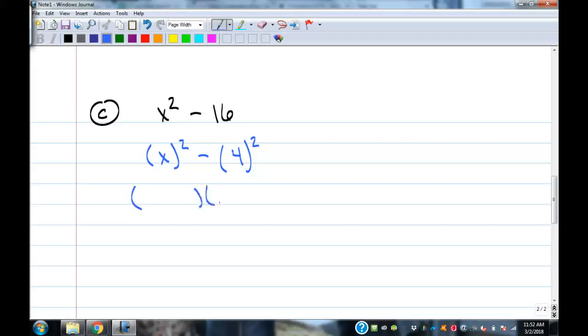And the factoring is really easy. You get two factors. X goes in the front of both of them, because that's what's in the parentheses here. Four goes in the back of both of them, because that's what's in the parentheses here. One's a plus, one's a minus. You're done.